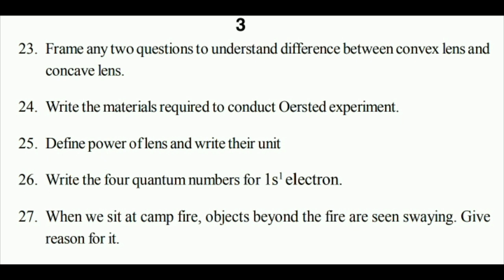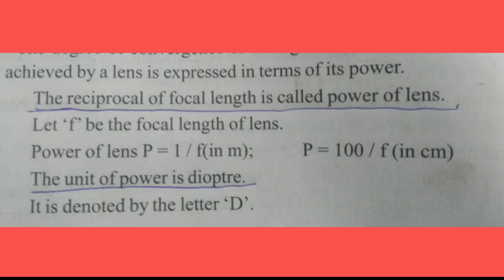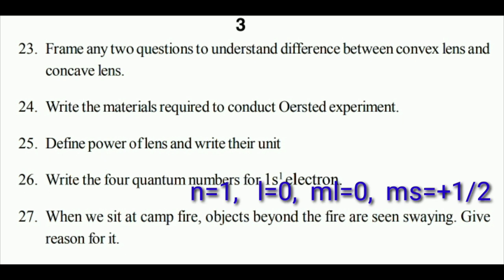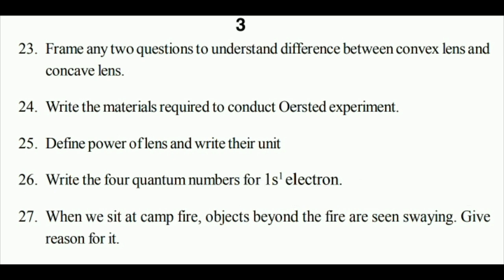Define power of lens and write their units. The reciprocal of focal length is called power of lens, and the units of power is diopters. Write the 4 quantum numbers of 1s1 electron: n principal quantum number = 1, l = 0 for s orbital, ml = 0, ms = plus half.